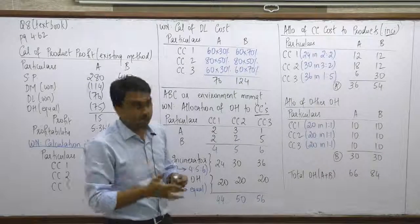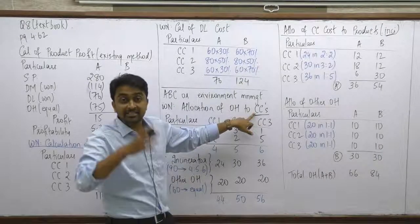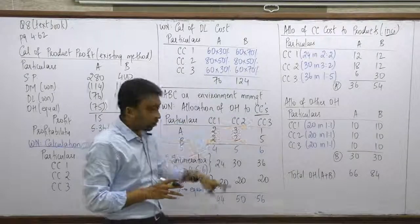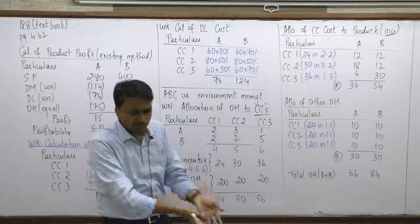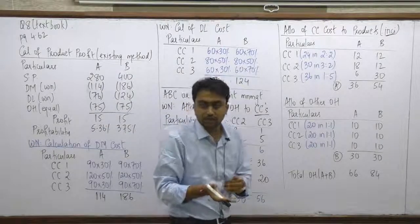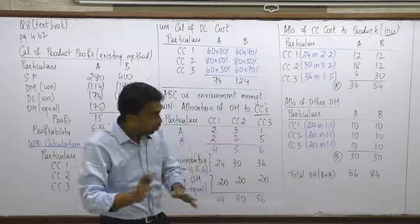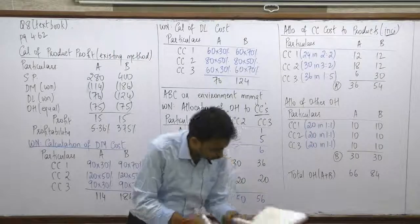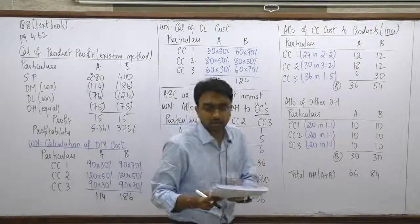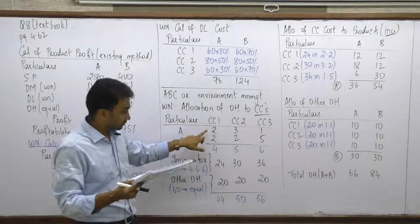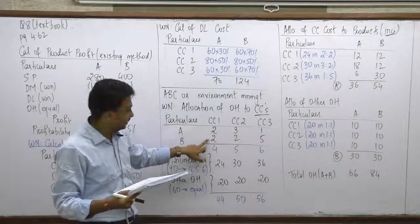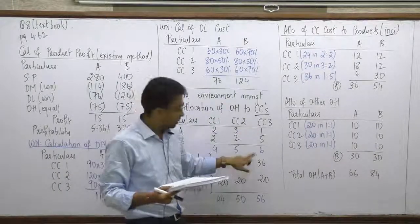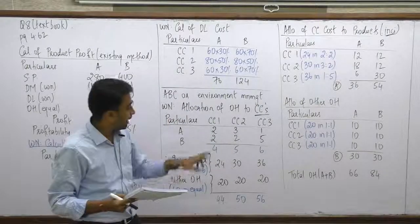The basis for allocating incinerator costs among cost centers should be the waste generated, since incinerator cost is waste-based. The waste data (in tons) is given in the second table: Cost Center 1 has 2 tons (Grade A) + 2 tons (Grade B) = 4 tons; Cost Center 2 has 3 + 2 = 5 tons; Cost Center 3 has 1 + 5 = 6 tons.